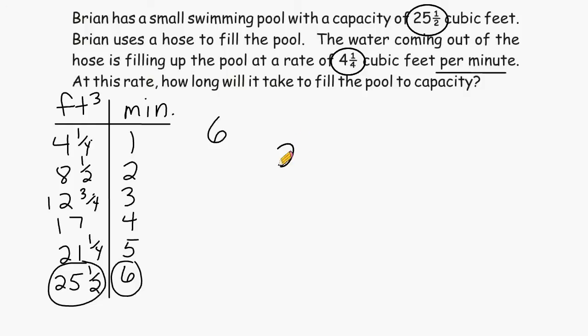Another way to solve this problem is by taking the capacity of the pool, which is 25½ cubic feet, and dividing it by the amount of cubic feet that is filling the pool per minute to see how many minutes it would take to fill to capacity. So 25½ can be renamed to 51 halves, and 4¼ can be renamed to 17 over 4.